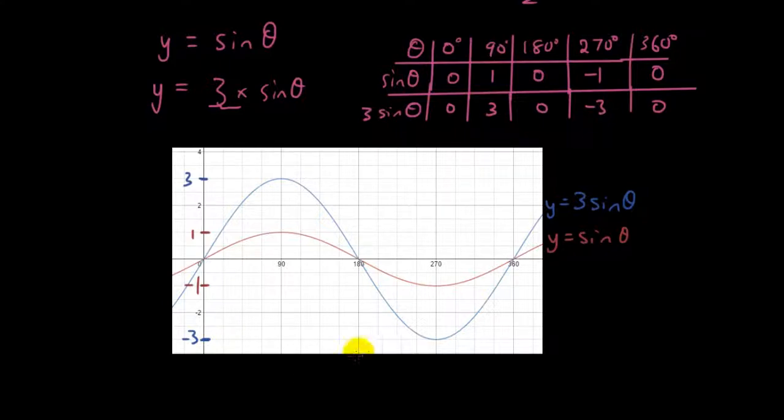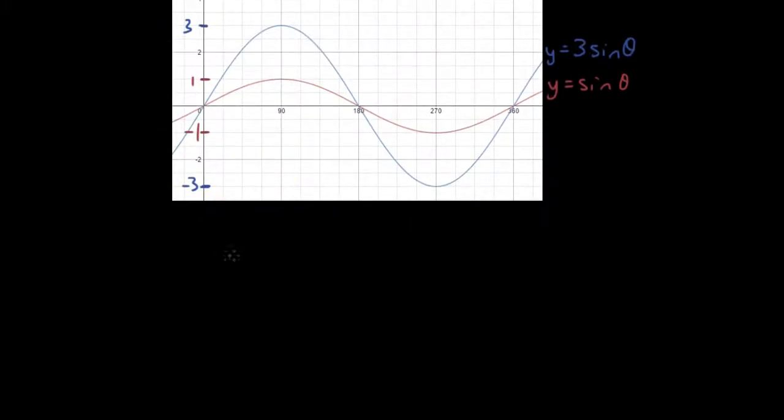We have what we call vertical dilation. We've stretched the graph vertically. So the number at the front of the equation, the number 3, so if I have the equation y equals a sine theta, where a is a constant, a is a real number, so a can be 1, 2, 3, 4, 5, or 2.3, whatever you want. a is a constant.